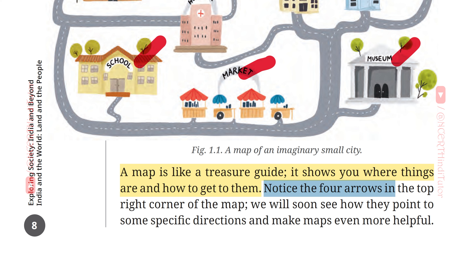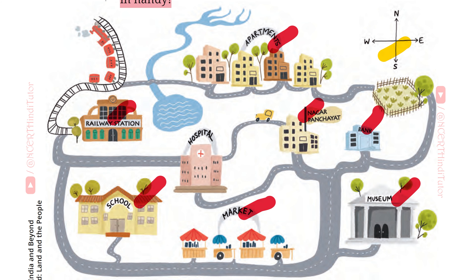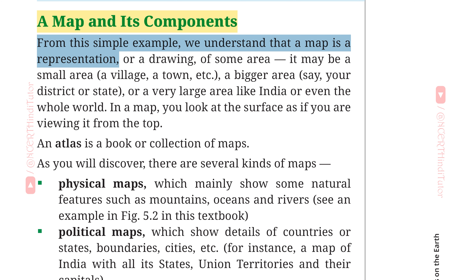Notice the four arrows in the top right corner of the map. We will soon see how they point to some specific directions and make maps even more helpful. नक्शे के ऊपर दाएं कोने में चार तीरों पर ध्यान दें। From this simple example, we understand that a map is a representation or a drawing of some area.